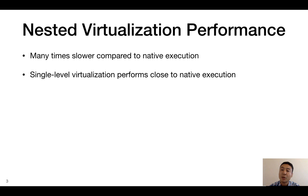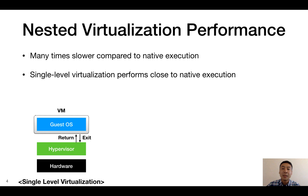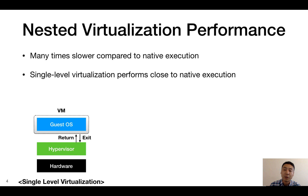The key for the performance difference between the two cases is how much hypervisors are involved for virtual machine execution. For single-level virtualization, a virtual machine exits to the underlying hypervisor when executing some instructions that need the hypervisor's intervention. Some examples are instructions accessing an I/O device provided by the hypervisor, or instructions to shut down the system. The instruction emulation can be done quickly since the hypervisor runs directly on hardware and has full control of it.